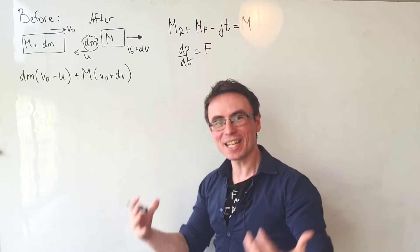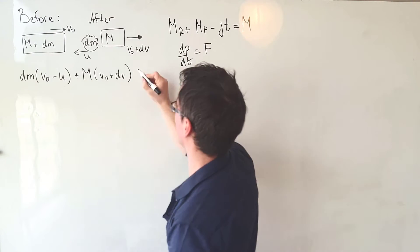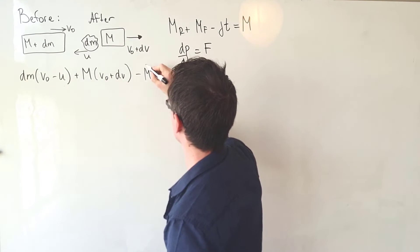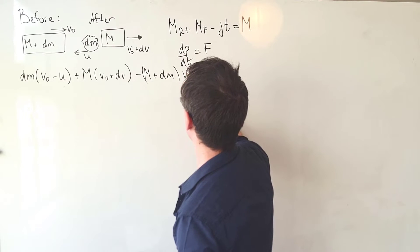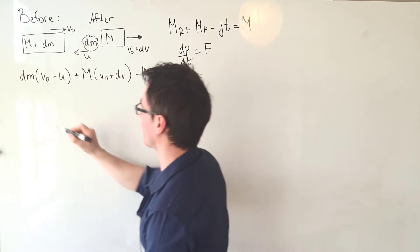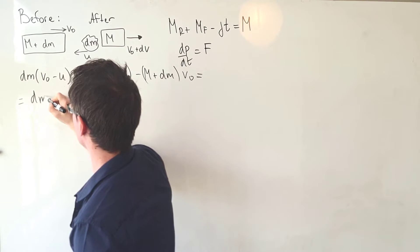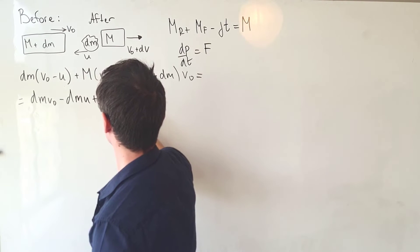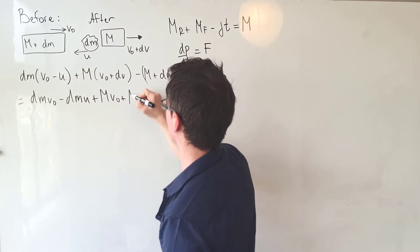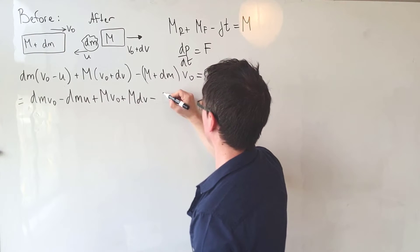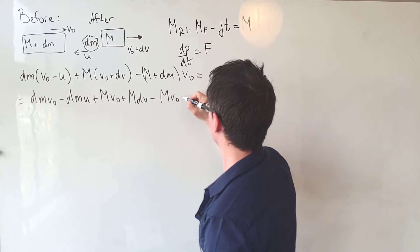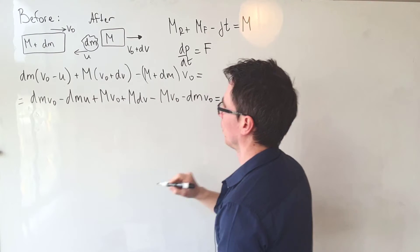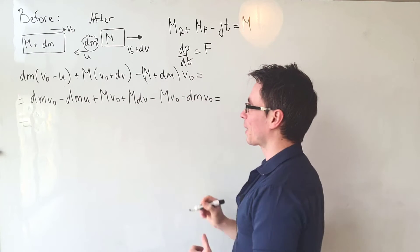From this expression, let's subtract the initial momentum to find the change in momentum. The initial momentum is (m + dm) multiplied by v₀. Expanding, we get: dm·v₀ - dm·u + m·v₀ + dm·v₀ - (m + dm)·v₀.